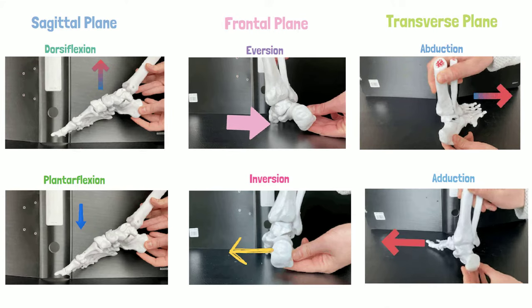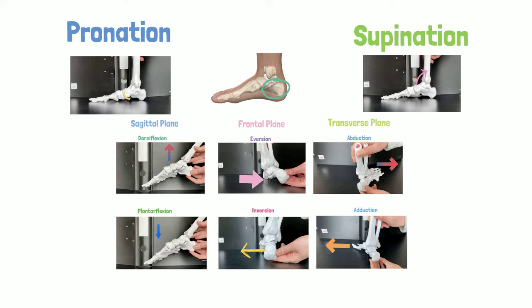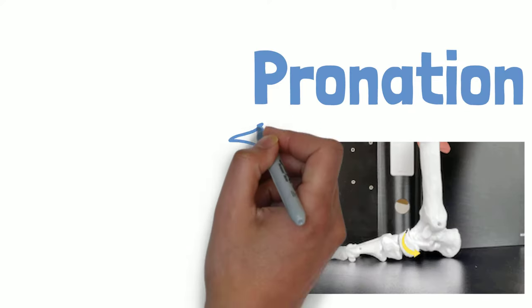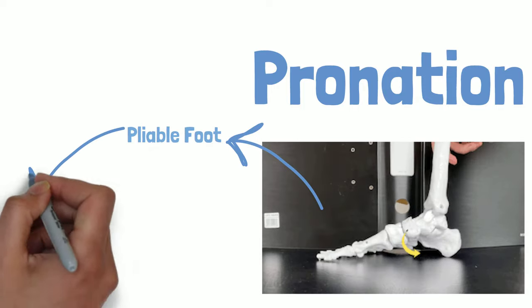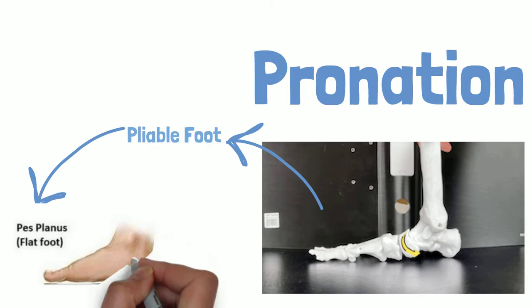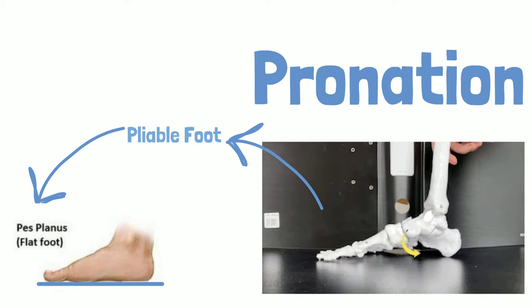The combination of the three cardinal plane movements will produce the triplanar movements of pronation and supination. Pronation is associated with lowering of the medial longitudinal arch and a pliable foot. In extreme cases pronation is associated with pes planus or abnormally low medial longitudinal arch.